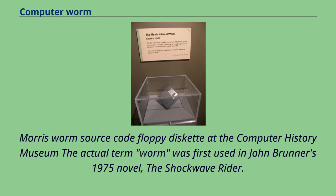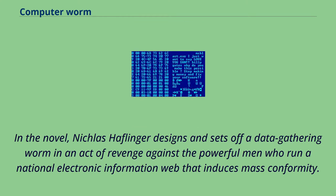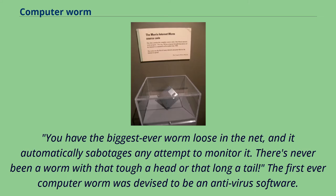Morris worm source code floppy diskette at the Computer History Museum. The actual term 'worm' was first used in John Brunner's 1975 novel, The Shockwave Rider. In the novel, Nicholas Halflinger designs and sets off a data-gathering worm in an act of revenge against the powerful men who run a national electronic information web that induces mass conformity: 'You have the biggest ever worm loose in the net, and it automatically sabotages any attempt to monitor it. There's never been a worm with that tough a head or that long a tail.'